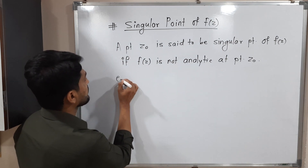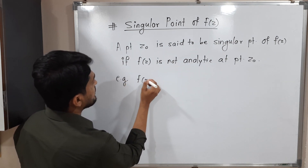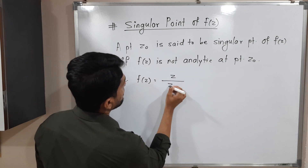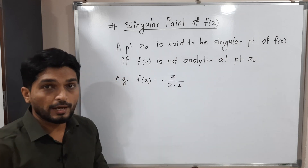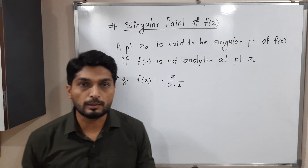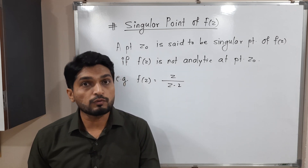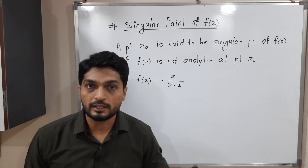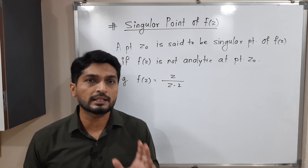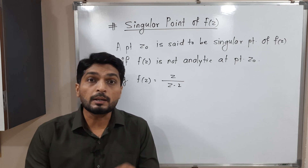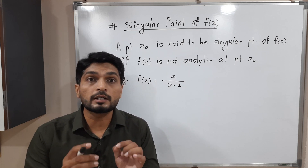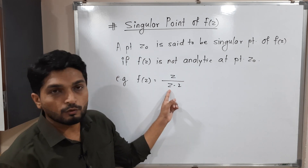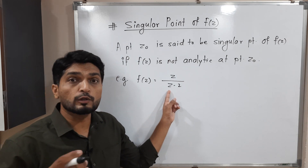For example, suppose f of z is z upon z minus 2. So we have to find its singular point. That means we have to find a point where the function is not analytic. We have a very simple technique for that — we will find a point where the denominator is 0. For what value of z will the denominator be 0?